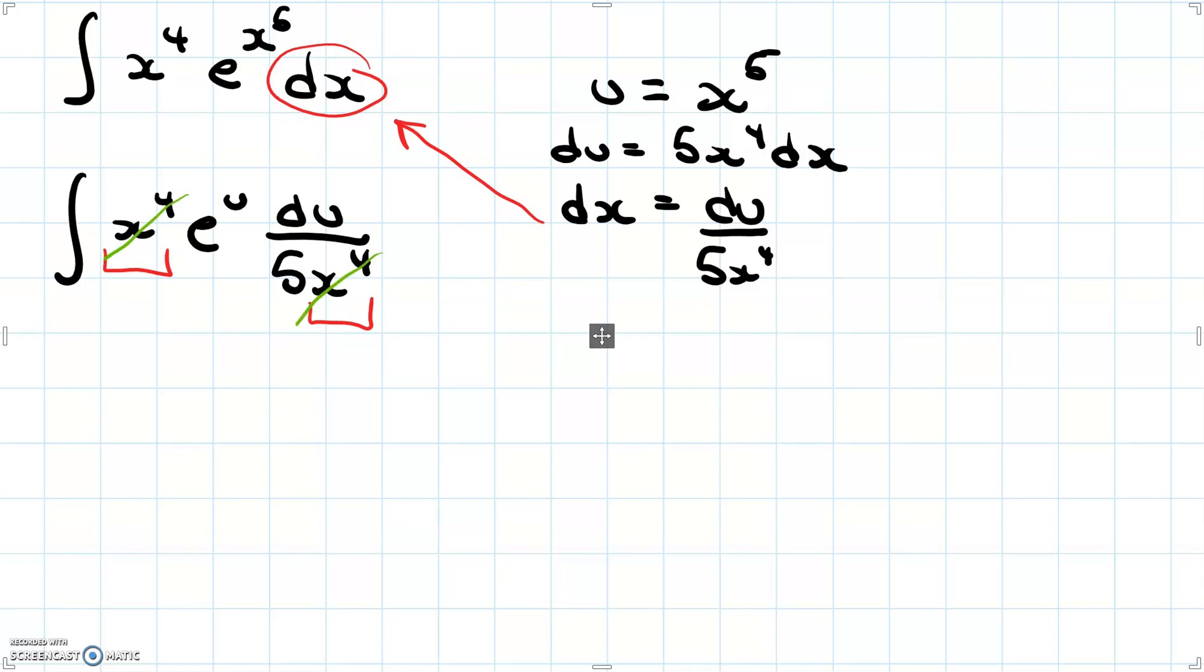But after we've done that, we're going to have this 5 still here, which we could kind of take out of our integral and make it 1 over 5, which is what I'm going to do. So now I have e to the u du. If I take the integral of e to the u, I'm just going to get e to the u. So that's pretty simple. So I'll get 1 over 5 e to the u plus c.